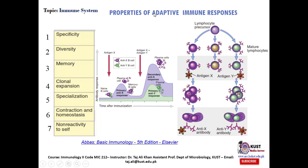There are certain properties of the adaptive immune response: number one, specificity; second, diversity; third, memory; fourth, clonal expansion; fifth, specialization; sixth, contraction and homeostasis; and seventh, non-reactivity to self antigens.